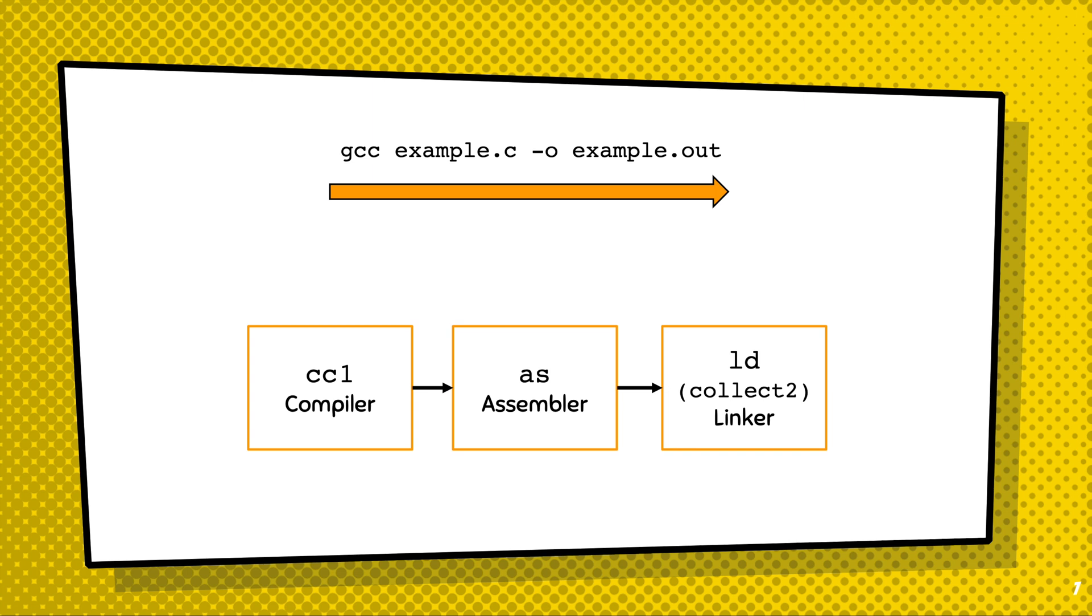The compiler of gcc is cc1, the assembler is as, and the linker is ld, which is wrapped by collect2. The fact that gcc is composed by multiple components is actually hinted in the complete name of gcc, the GNU Compiler Collection.